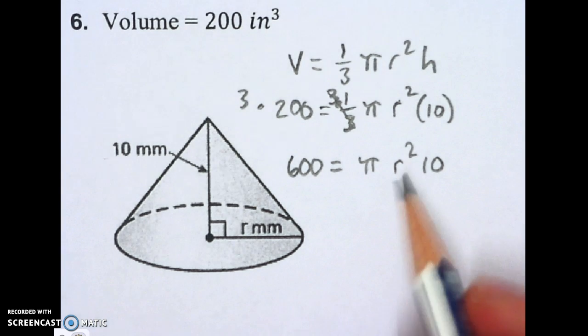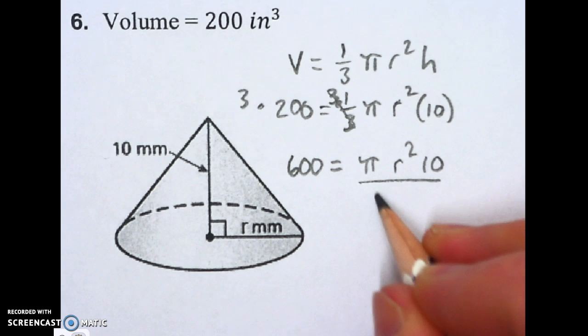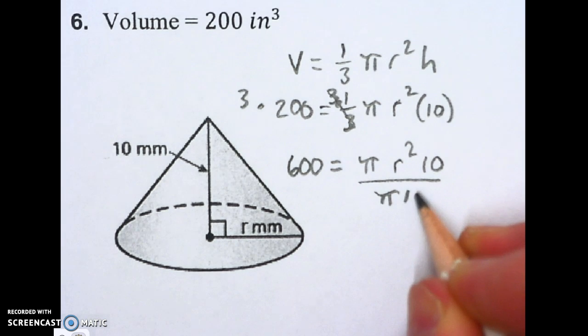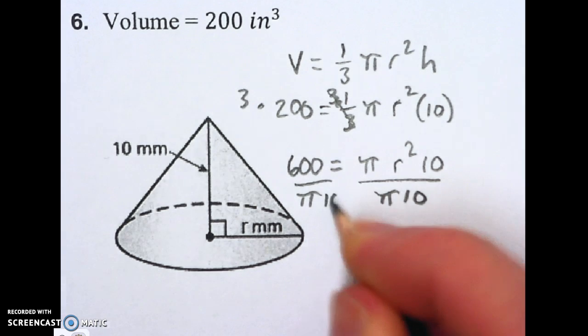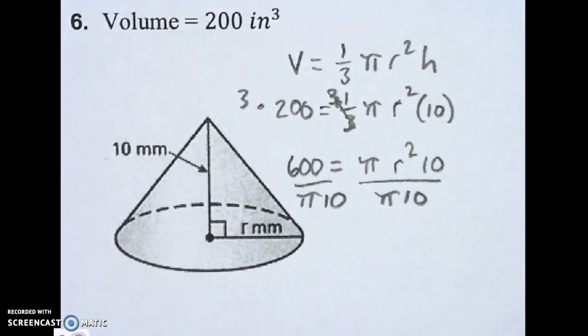The pi and the 10 are multiplying to the r squared. I want to get the r squared by itself, so let's divide them off. Divide by that on the other side.